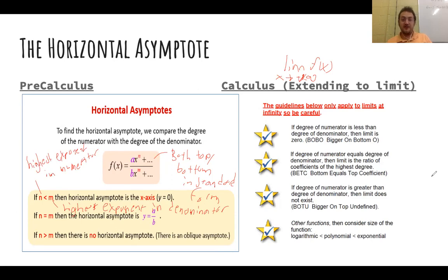Now let's read the calculus equivalent. If the degree of the numerator is less than the degree of the denominator, then the limit is zero. So basically, the only difference is that we now have the language of calculus, and we have limit as x approaches plus or minus infinity. Then if we have a degree in the numerator equaling the degree of the denominator, then the limit is the ratio of the coefficients of the highest degree.